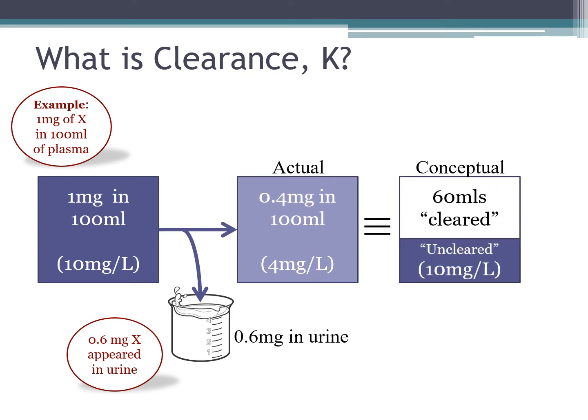For the concept of clearance, it would mean that 60 ml of the plasma is completely cleared of substance, while 40 ml of the plasma is uncleared, and it remains at 10 mg per liter. So this is a very theoretical and conceptual number.